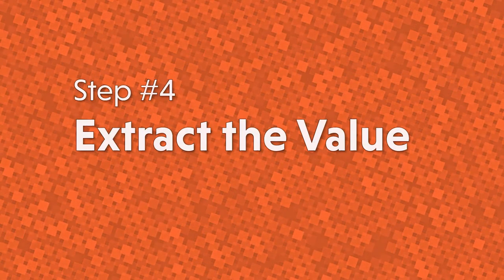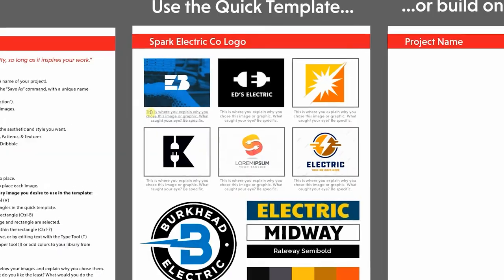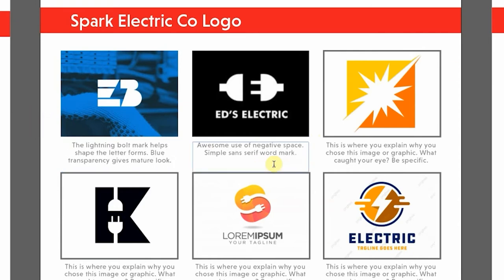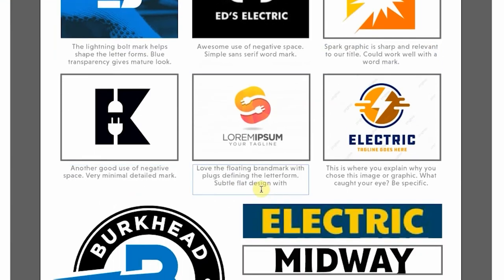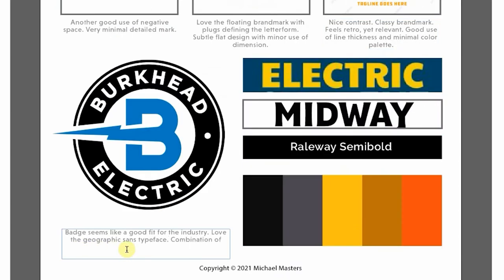Step number four: extract the value. Now that you have all of your design elements in position, we're going to do something that you really don't see on traditional mood boards. We're going to use this text underneath our pictures to briefly explain why we chose each graphic or image. Consider writing about things like the amount of detail, the boldness of colors and lines, the layout and alignment of the elements, or the proximity of elements in relation to each other. You don't need to write a novel, just list the parts that stood out to you the most.